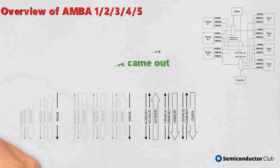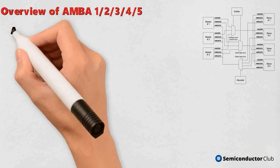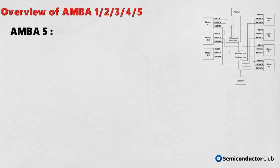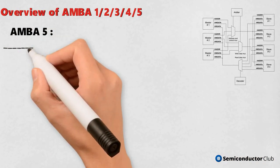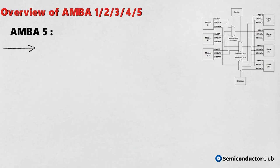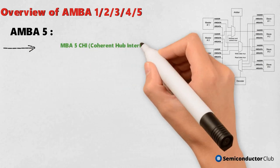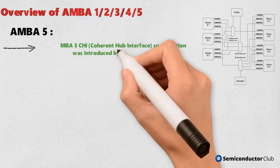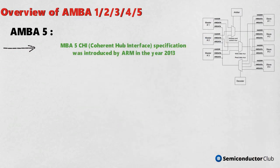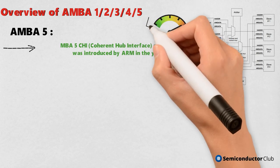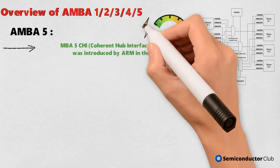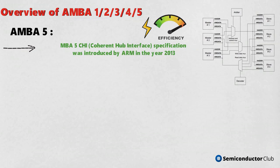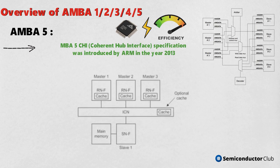AMBA 5: the Coherent Hub Interface (CHI) specification was introduced by ARM in the year 2013 to enable high-performance and scalable system-on-chip technology. It supports non-blocking coherent data transfers between processors using caches. This is used by Cortex-A57, Cortex-A53 processors, CoreLink DMC-520 Dynamic Memory Controller, and CoreLink CCN-504 Cache Coherent Network.